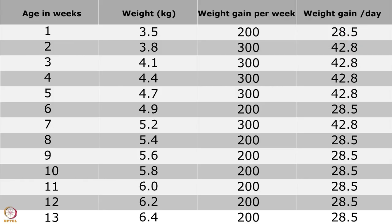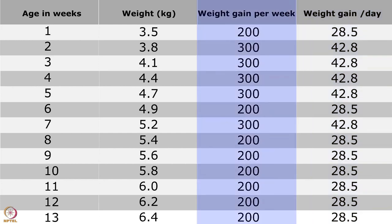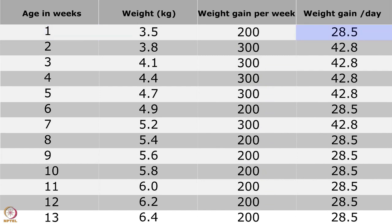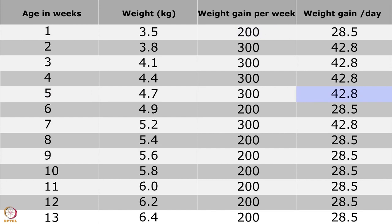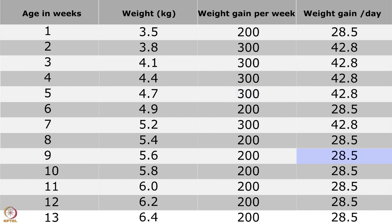Now let's look at the average weight gain for a boy. This table shows the average weight gain per day and per week. In the first week, the weight gain is 28.5 grams per day, with a total of 200 grams for the week. In the fifth week, weight gain is 42.8 grams per day, totaling 300 grams. In the ninth week, weight gain is 28.5 grams per day, totaling 200 grams.